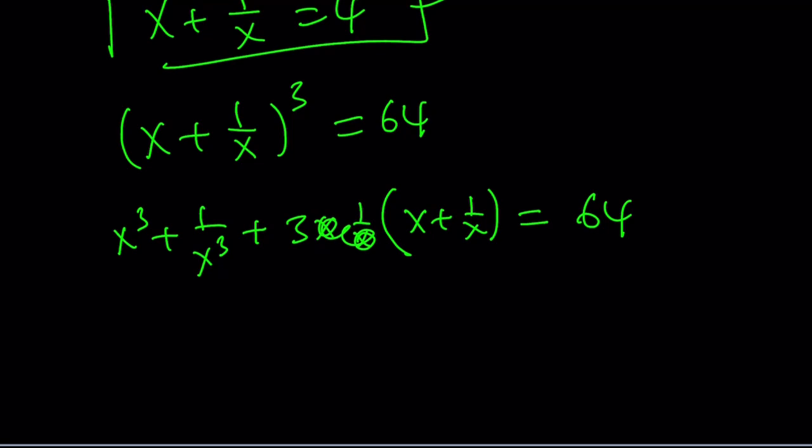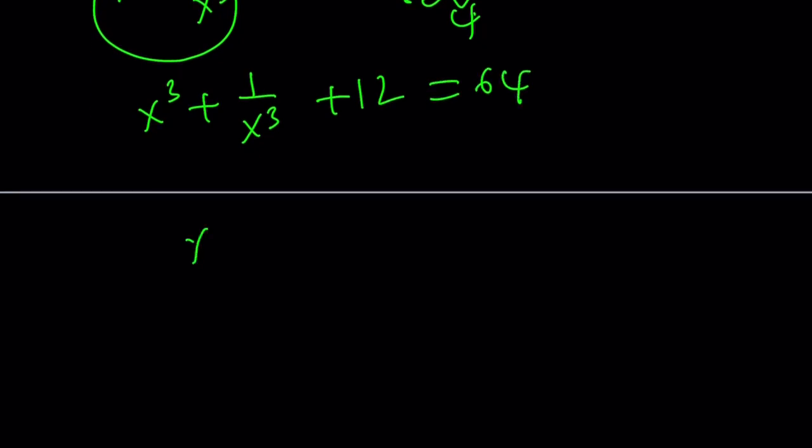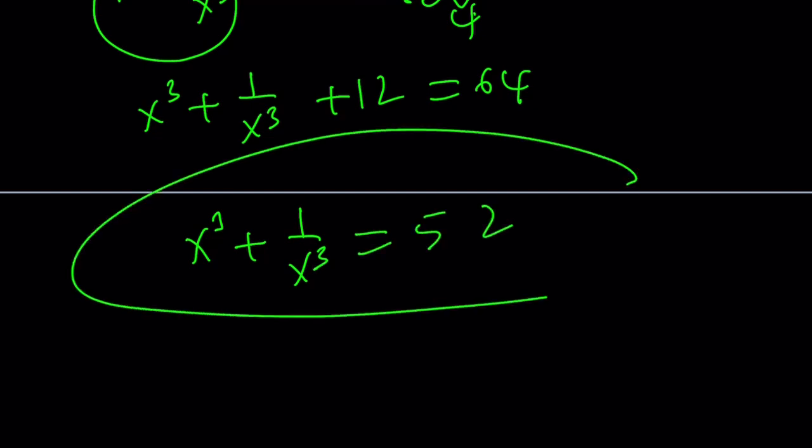These two cancel out, leaving us with this equals. And by the way, this is 4. 3 times 4 is 12. So x cubed plus 1 over x cubed plus 12 equals 64. And finally, x cubed plus 1 over x cubed becomes 52 as before.